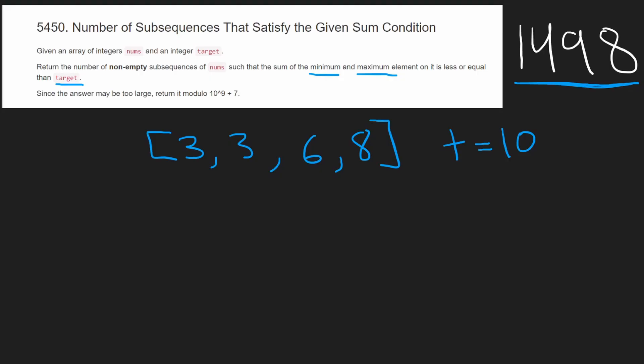So the way we can count the subsequences is say, okay, for each minimum, let's say this 3 is the minimum. How many other values can we add to it so that it's always less than 10? Well, we can add this 3 to it. 3 plus 3 is less than 10, less than or equal to 10.